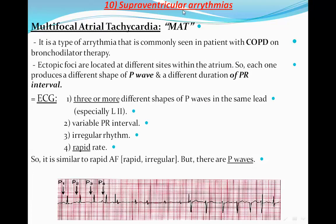Multifocal atrial tachycardia, or MAT, is a type of arrhythmia commonly seen in patients with COPD on bronchodilators. Ectopic foci are located at different sites within the atrium, so each focus produces a different shape of P-wave. Because the different foci are at different distances from the AV node, there will also be different PR intervals. On the ECG we will see three or more different shapes of P-waves — required to diagnose MAT, especially in lead II — along with variable PR intervals, irregular rhythm, and rapid heart rate.